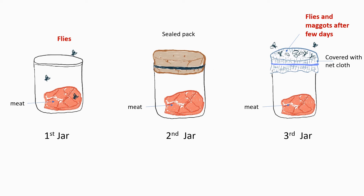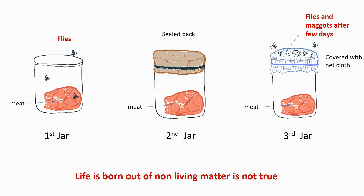He concluded that in the second jar, flies could not enter because it was tightly sealed, so flies and maggots were not originated from the meat. Hence, the theory that life is born out of non-living matter is not true.